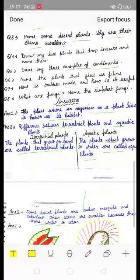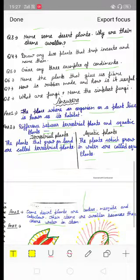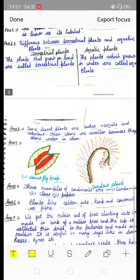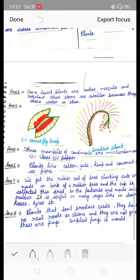Question number seven is how is rubber made and how is it useful? We get rubber out of the tree. Slanting cuts are made in the bark of a rubber tree and the sap is collected and dried in the factories and made into rubber.